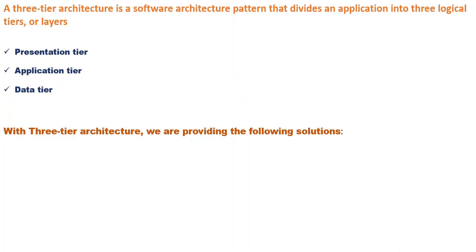With this three-tier architecture, you'll be providing some solutions. I'm going to mention the solutions you'll be providing by building this project, whether it's a personal project or in your organization. The first one is scalability — you'll have an infrastructure that is scalable and can withstand traffic or high demand, able to scale up or scale down depending on the demand. The second solution is high availability.